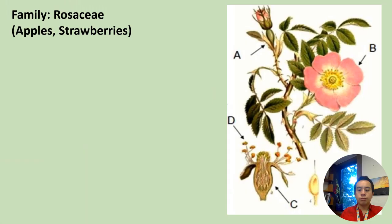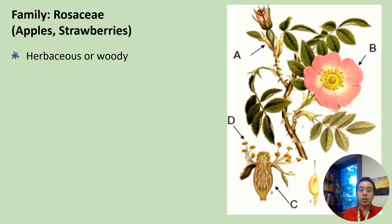Hello everybody, this week we will be talking about the Rosaceae family. You may already be a little familiar with the Rosaceae family because it includes a lot of common fruits you'll probably eat, and of course roses. It consists of apples, strawberries, and other plants. They can generally be herbaceous or woody, and oftentimes occur as shrubs and trees; however, some are forbs like strawberries.